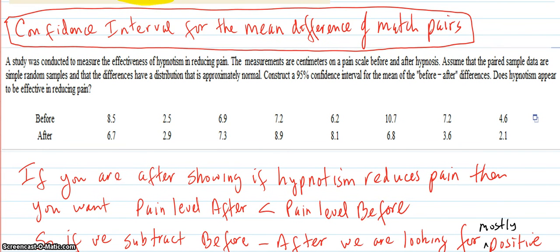Confidence interval for the mean difference of matched pairs data. So here's how matched pairs work.